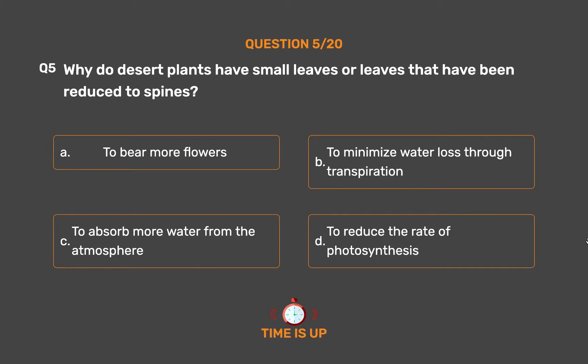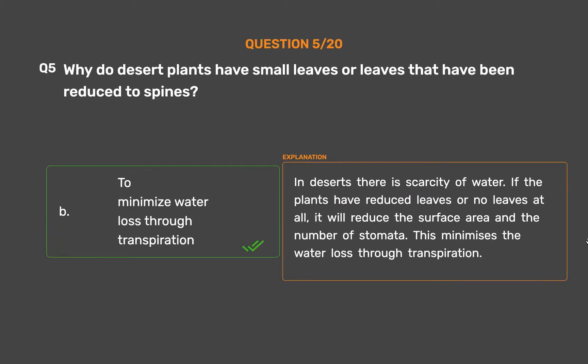The correct answer is Option B: to minimize water loss through transpiration. In deserts there is scarcity of water. If the plants have reduced leaves or no leaves at all, it will reduce the surface area and the number of stomata. This minimizes the water loss through transpiration.